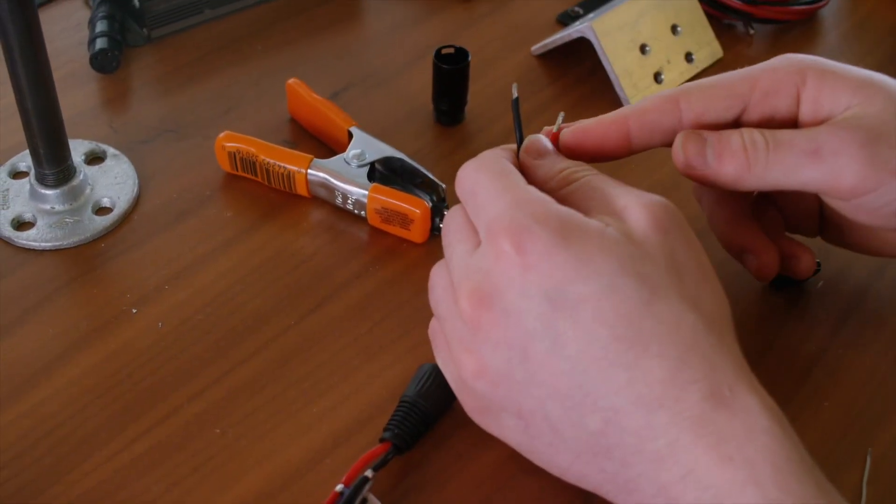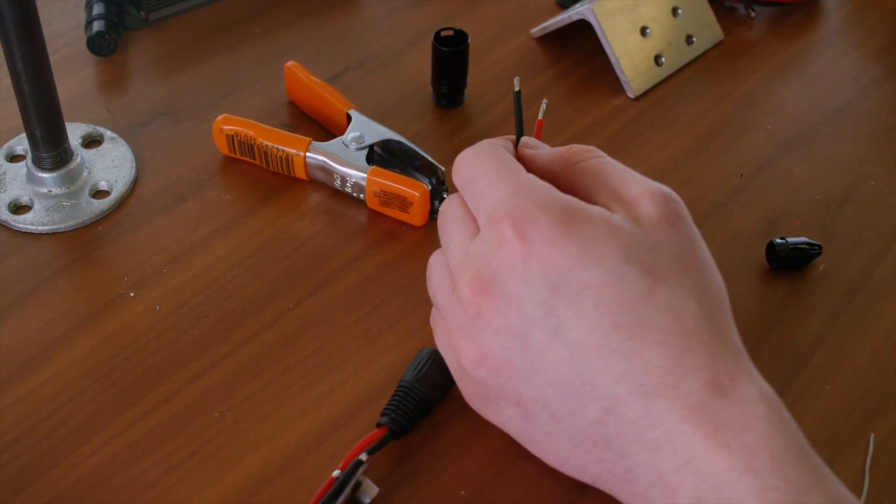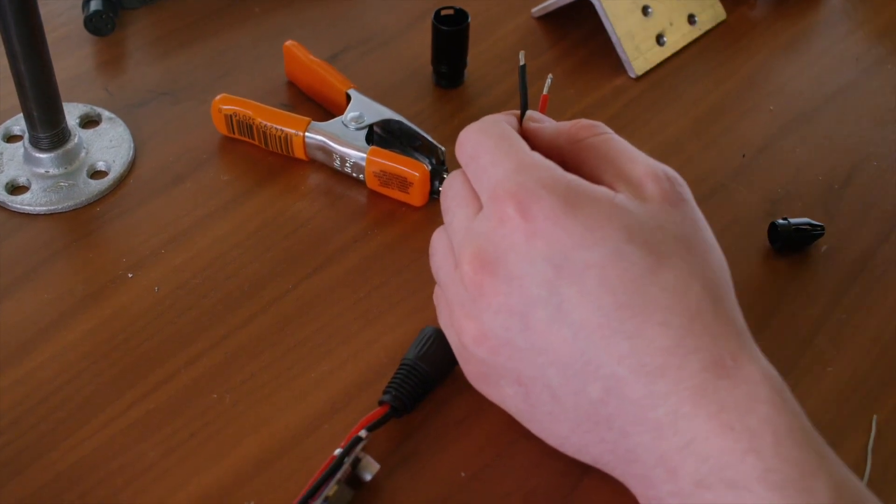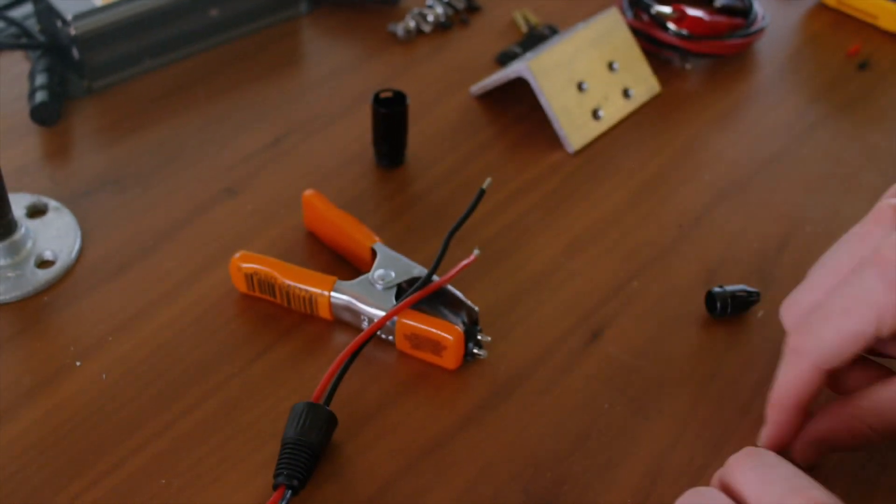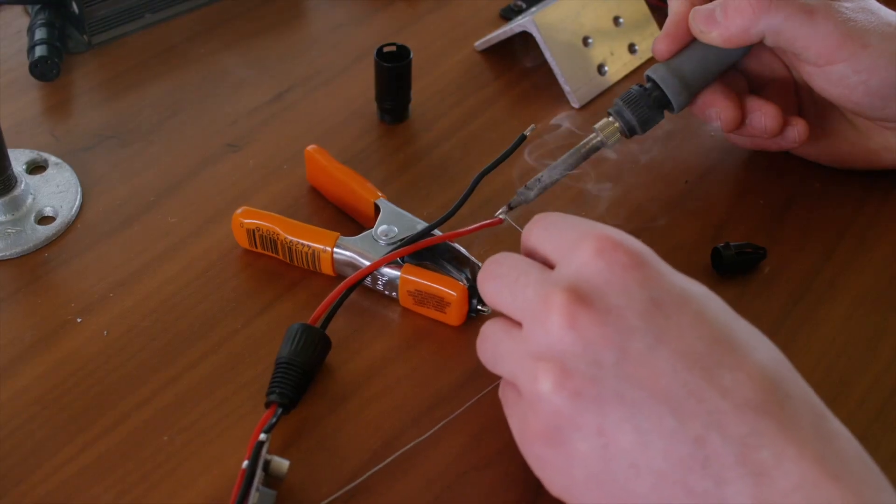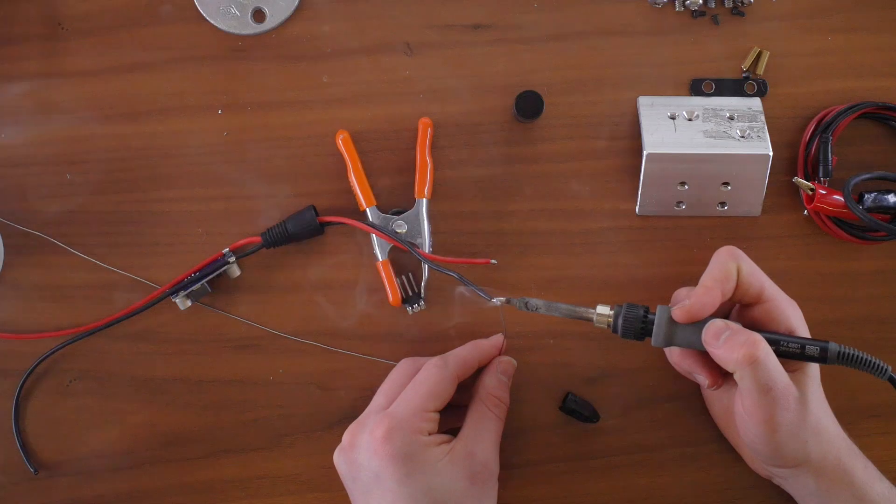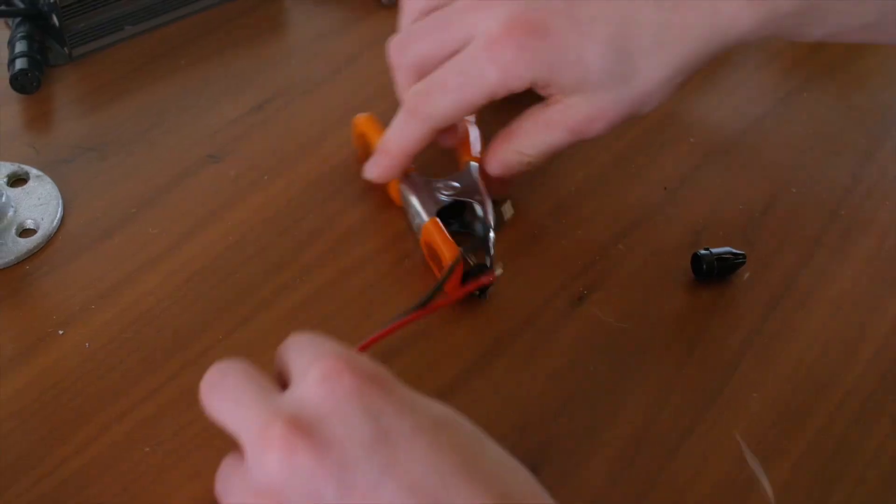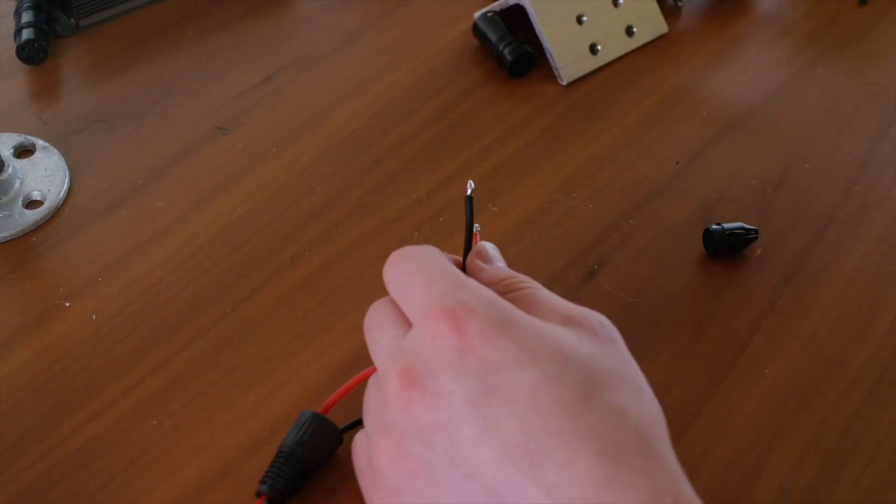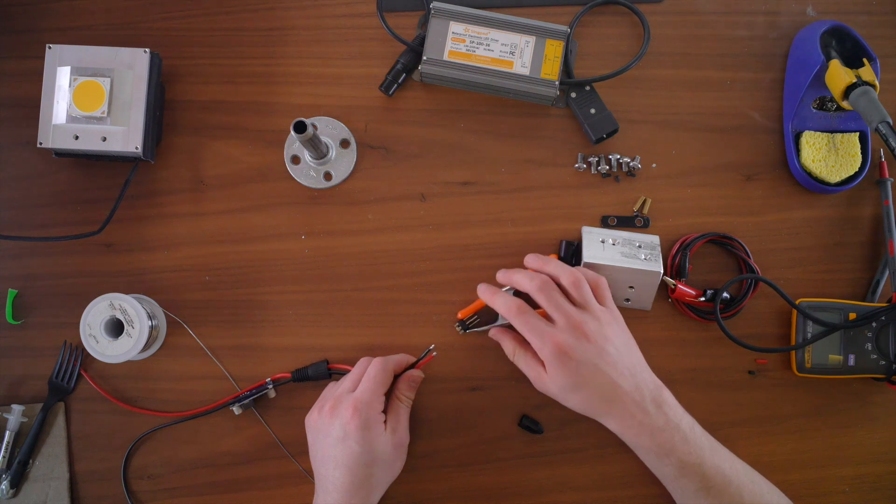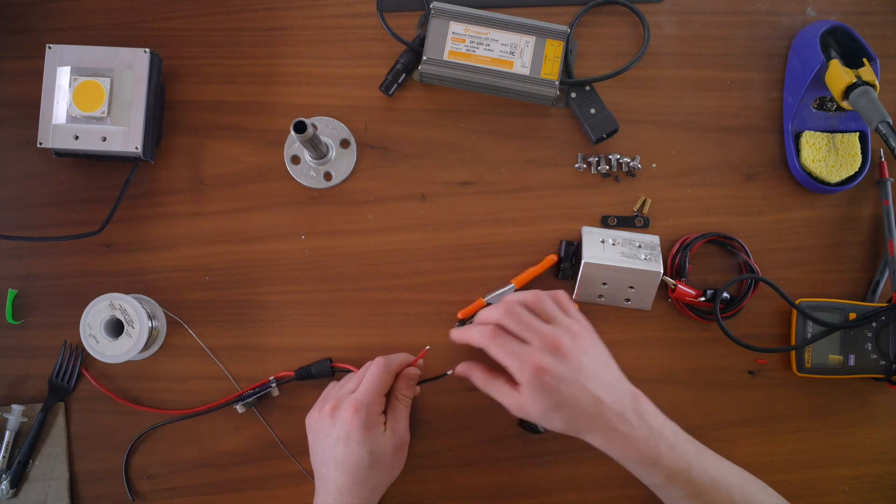So go ahead and take the cable shield and slide it over the wires. And now I'm going to cut down the exposed section of wire just so there's just enough to sit on the solder pad. Now I'm going to go ahead and tin the exposed wires. Now I'm going to go ahead and solder pin one to the negative wire, the black wire, and pin two to the positive wire, the red wire.